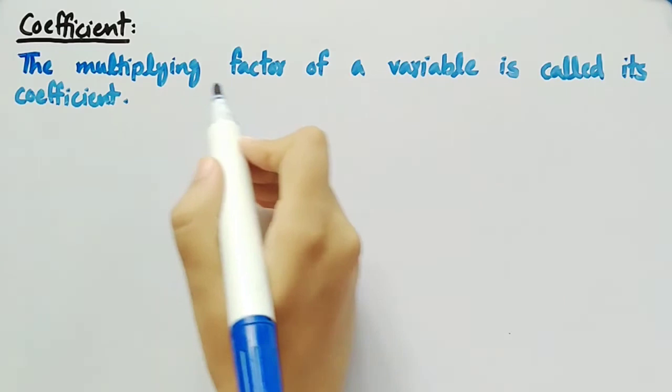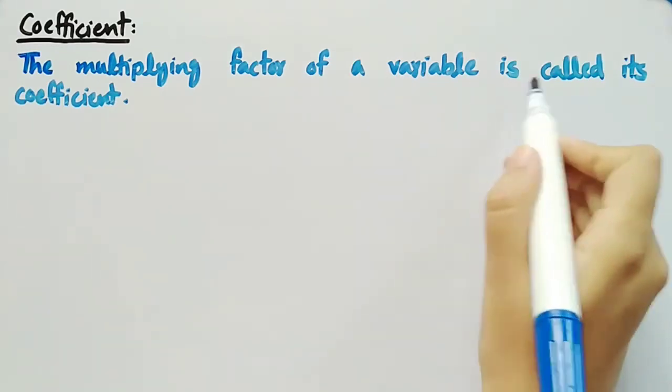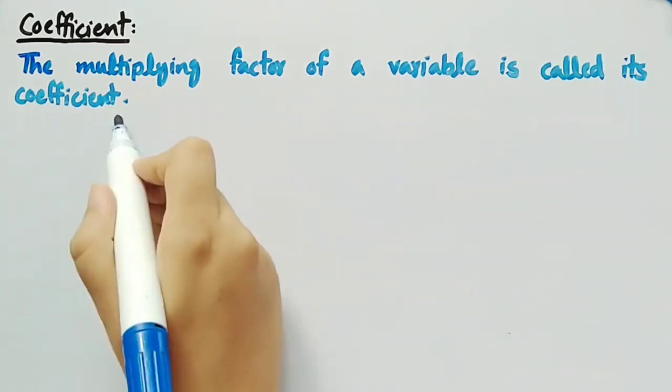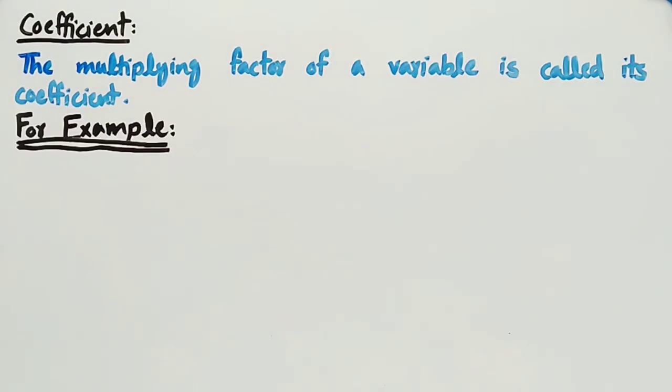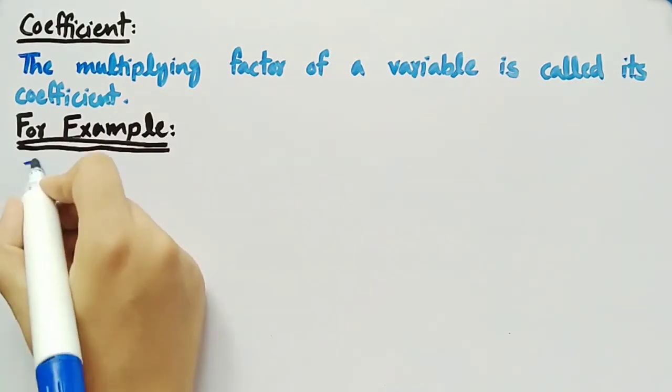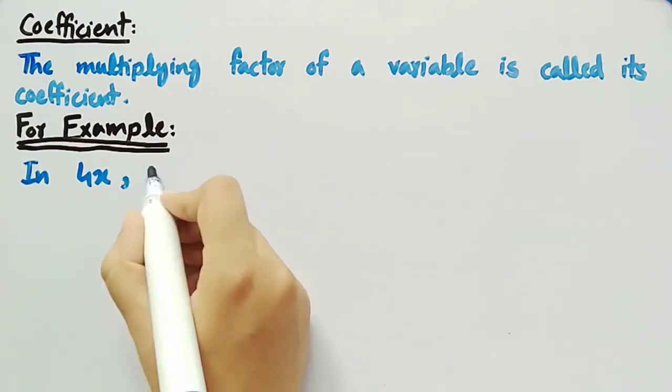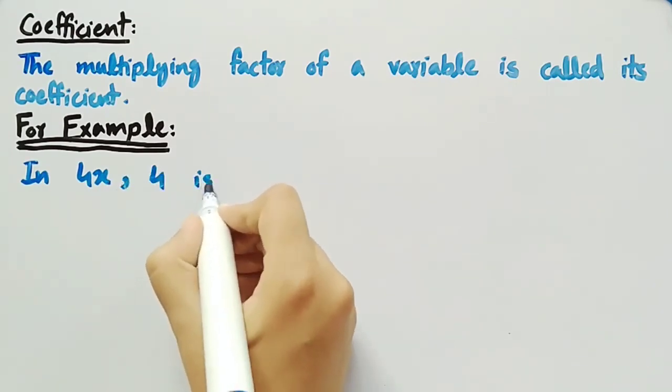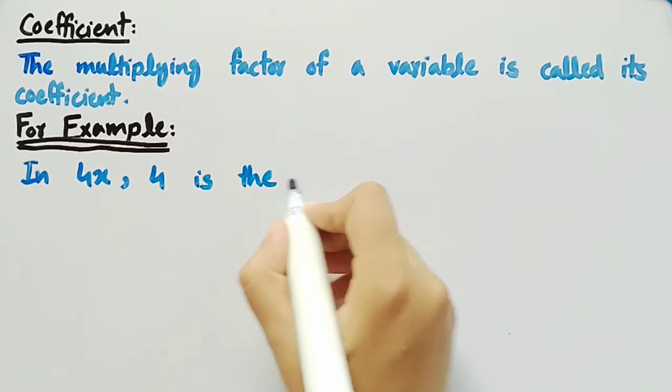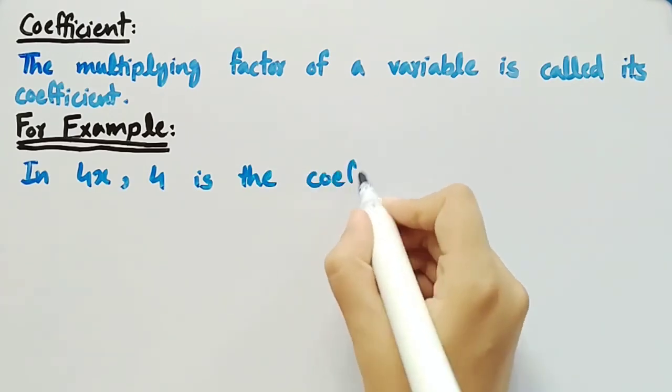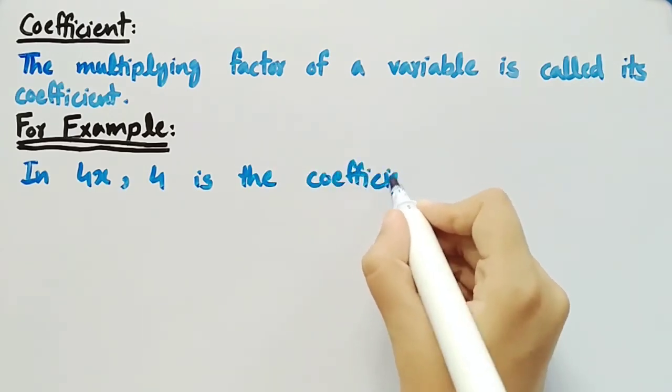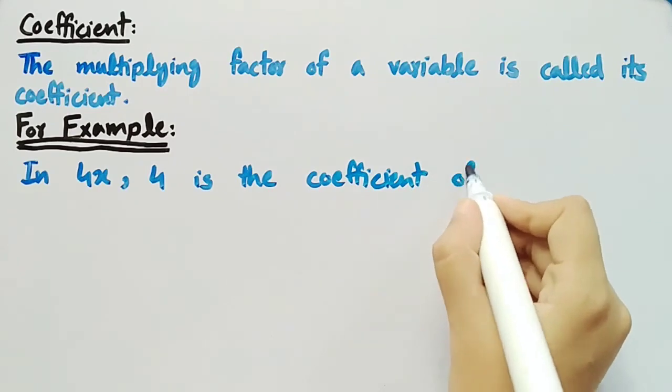Last but not the least, we will see what is coefficient. The multiplying factor of a variable is called its coefficient. For example, in 4x, 4 is the coefficient of x.